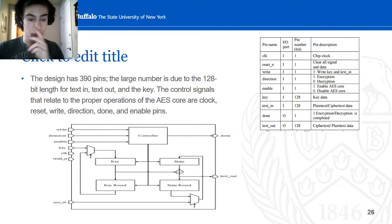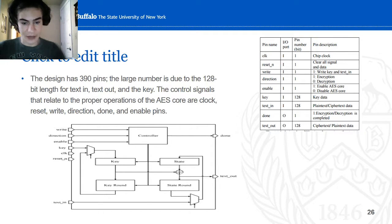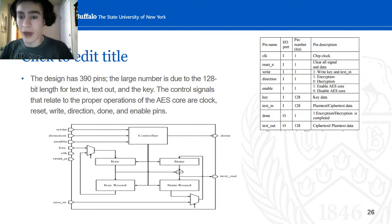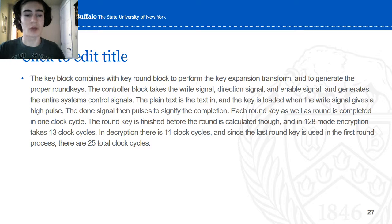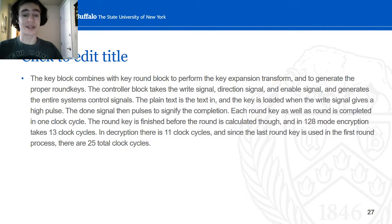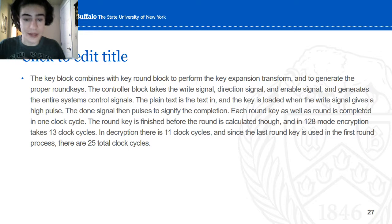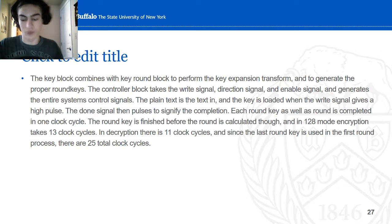Here's the logical block diagram of the encryption implementation. There's a controller, key rounds, and states. The right side shows the totality of the pins and what they represent. The key block combines with the key round block to inform the key expansion settings, as well as to generate the proper round keys. The controller block takes the write signal, reset signal, and enable signal, running the entire system's control. Each round key is implemented in one cycle. For encryption there are 13 clock cycles, and for key scheduling there are 11, totaling 25 clock cycles.